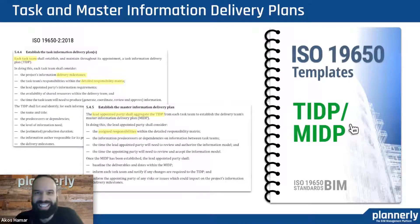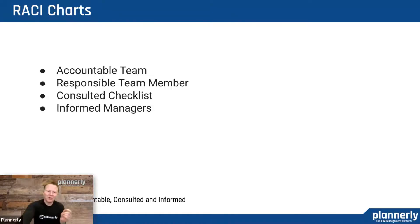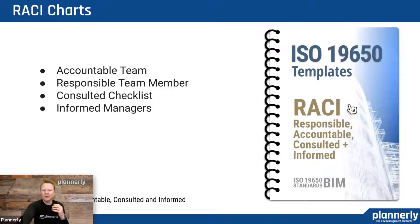We happen to have a template for that. And then RACI charts — lots of people pronounce these differently. How do you assign accountability to a team, responsibility to a team member, and have consulted people at the right times and people that are informed about the results? It's responsible, accountable, consulted, informed. Being able to assign somebody specifically as a responsible person is really, really powerful — not just having a list of tasks, but making sure they are assigned to the right teams. Inside the RACI charts, you see all those ISO 19650 clauses and a grid to assign who is responsible, who is accountable, who needs to be consulted, and who needs to be informed.